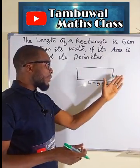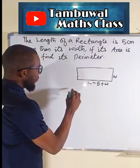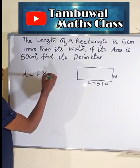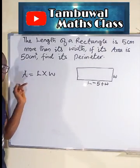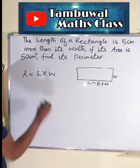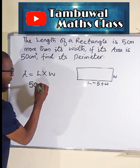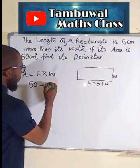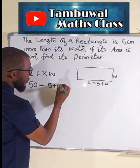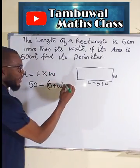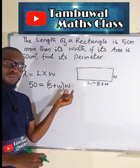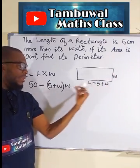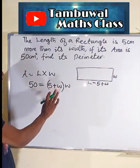We know that length multiplied by the width will give us the area. So we can find our area equal to length multiplied by the width. But area is given from the question as 50 cm squared. So we can say 50 equals the length, which is now equal to 5 plus w, multiplied by w again, because length times width equals our area. The length is 5 plus w, while the width remains w. Now let us expand this parenthesis.